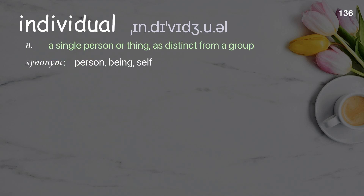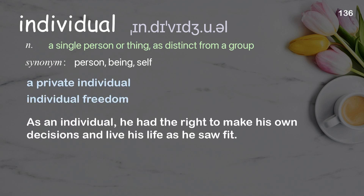Individual: A single person or thing as distinct from a group. Examples: a private individual, individual freedom. As an individual, he had the right to make his own decisions and live his life as he saw fit.